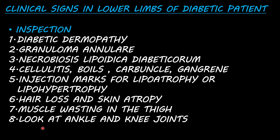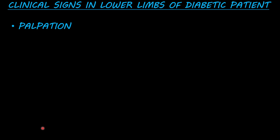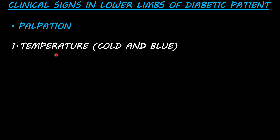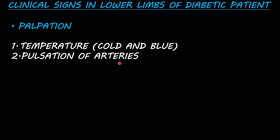We will look at the ankle and knee joint. There may be Charcot arthropathy, which occurs in diabetic patients due to deformity as a result of sensory neuropathy — the joints become deformed. On palpation, we will check for temperature, then palpate the arteries: dorsalis pedis, posterior tibial artery, popliteal artery, and femoral artery.